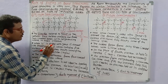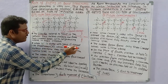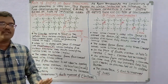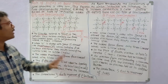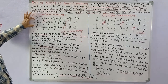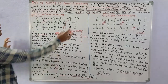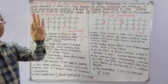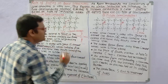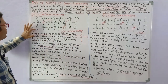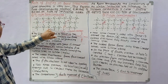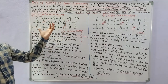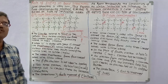When silicon is doped with a group 15 element like phosphorus — phosphorus is a fifth group element, so it has five valence electrons. Phosphorus occupies some of the lattice sites in the silicon crystal in place of silicon atoms. The added phosphorus forms four covalent bonds with silicon atoms.